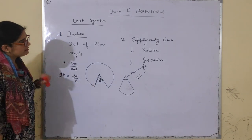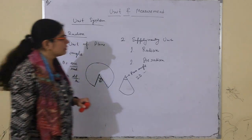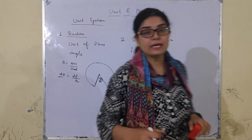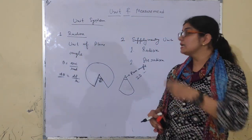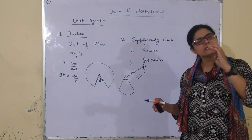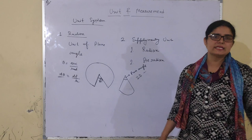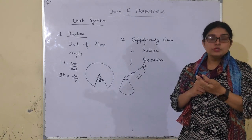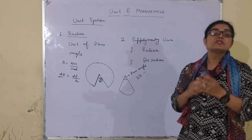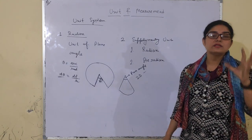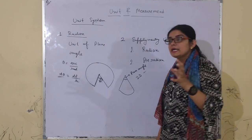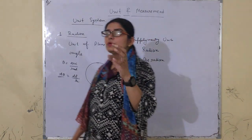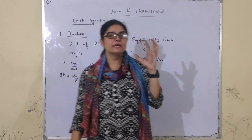Ab dusri term — that is steradian. Steradian use hota hai solid angle ke liye. Solid angle ka matlab: aapke paas ek bilkul gol tarbuz hai — us mein se ek cornet ice cream shape wala part nikaal lo.